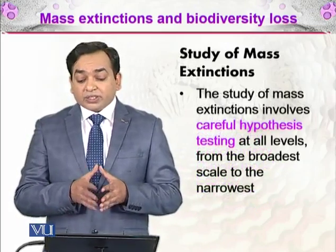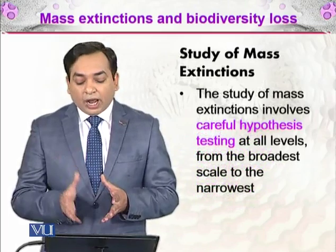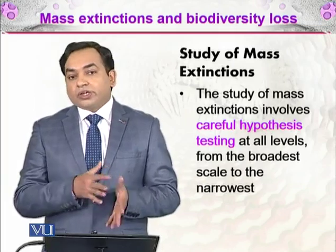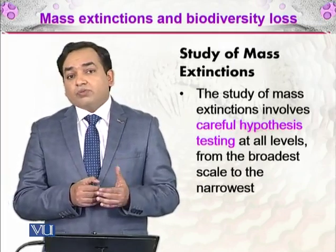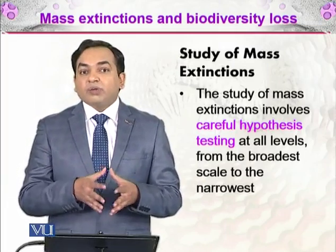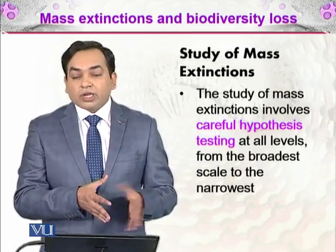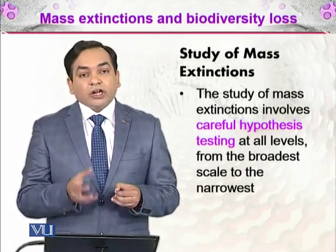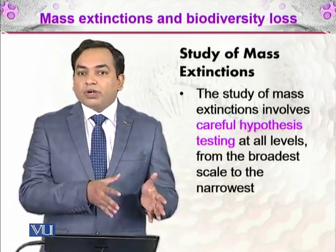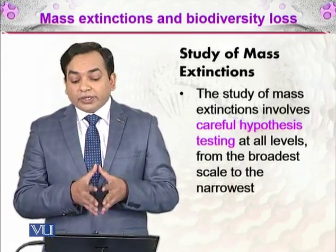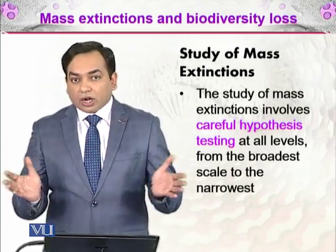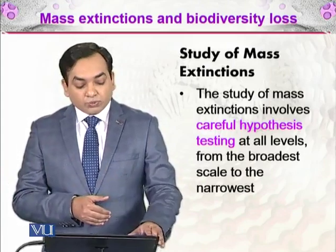The study of mass extinction involves careful hypothesis testing at all levels — from the broadest scale to the narrowest. At the broadest scale, for example, what happened when a meteorite struck 65 million years ago and killed the dinosaurs. At the narrowest, what was happening 3 million years ago in a particular area of the world. Mass extinctions can be studied at very large or very small scales.